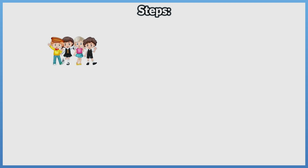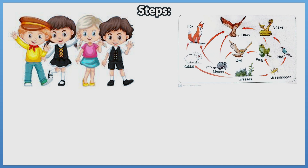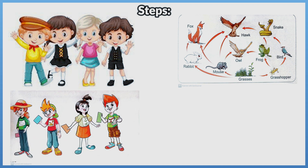Steps: Step 1 — Choose some of your friends to play a game of predator-prey tag. Step 2 — Observe the picture of the food web carefully with your friends. Step 3 — Give each one of your friends a card labeled with an organism from the food web and a paper square.